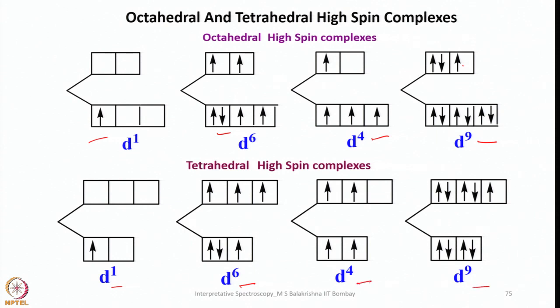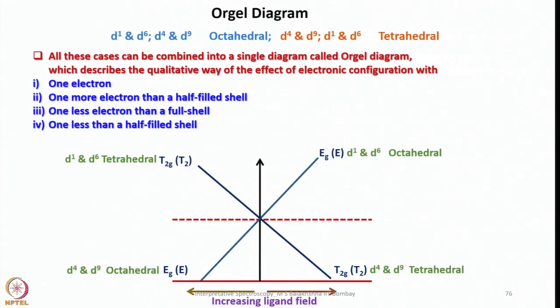All these electronic configurations have similarities: D¹, D⁶, D⁴, D⁹ — D¹ and D⁶ have one electron and one more than half filled; D⁴ is one less than half filled; D⁹ is one less than completely filled. Is it possible to combine all these to make interpretation simple? That is what we do in the Orgel diagram. The Orgel diagram considers D¹, D⁶, D⁴, D⁹ octahedral systems as well as D⁴, D⁹, D¹, D⁶ tetrahedral systems.